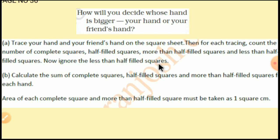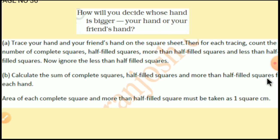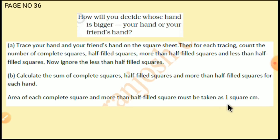Ignore less than half filled squares. Calculate the sum of complete squares. Then count the half filled squares and more than half filled squares for each hand. The area of each complete square and more than half filled square must be taken as one square centimeter.